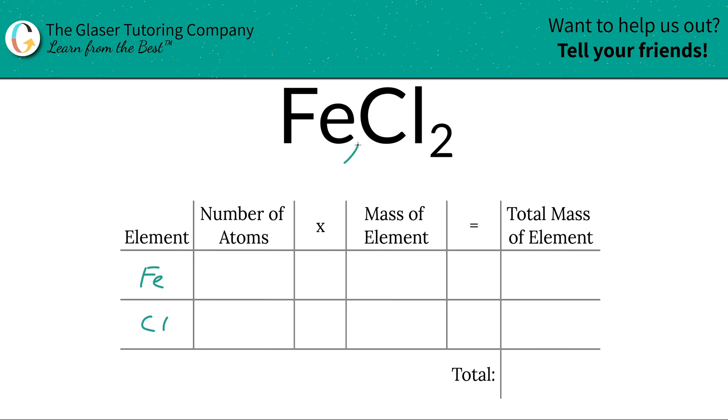Next is to write down the number of atoms of each, and that's where the subscripts come into play. So at the bottom of iron, there's an invisible one, so that means there's one iron. At the bottom of chlorine, there's a two, so that two tells us that there are two atoms of chlorine.